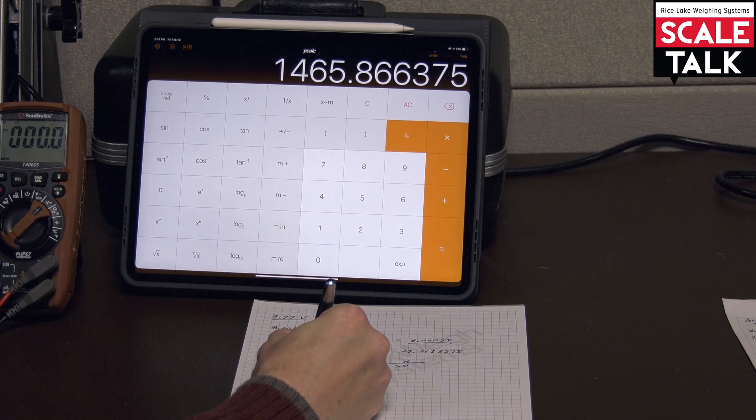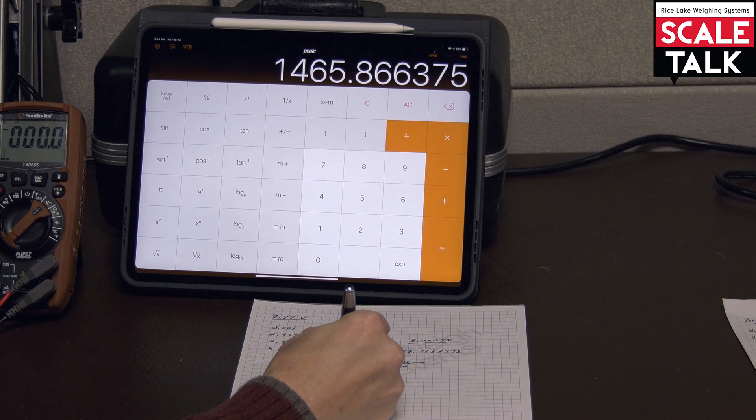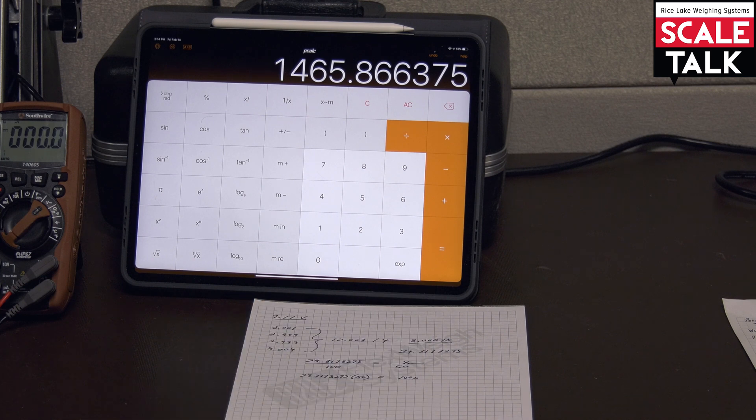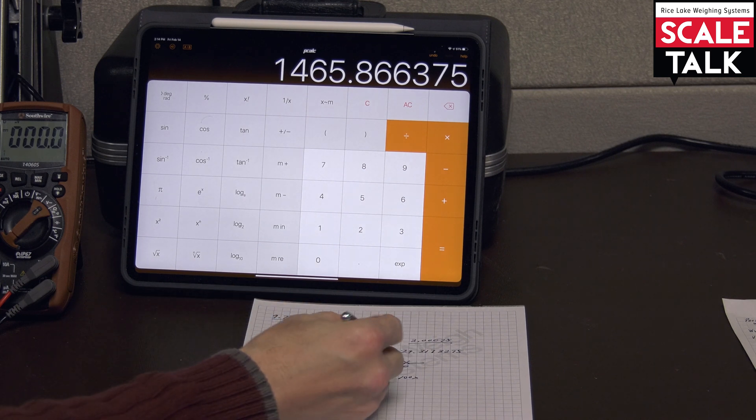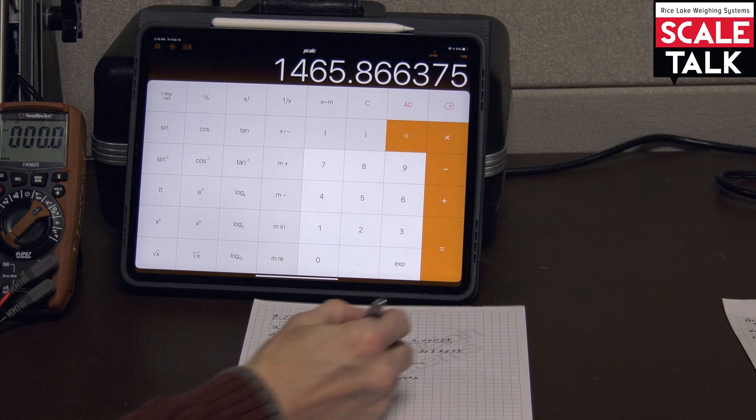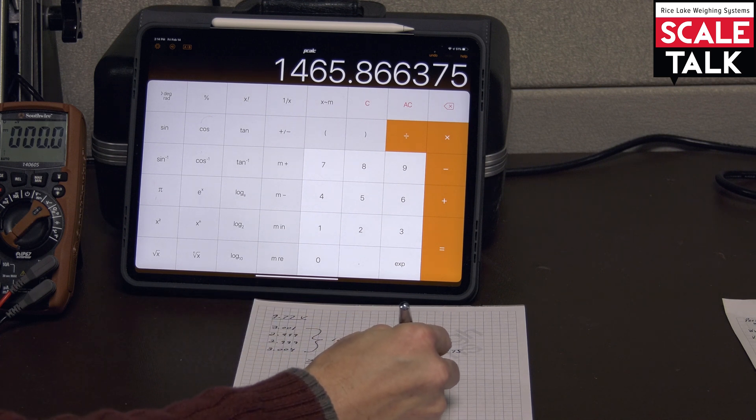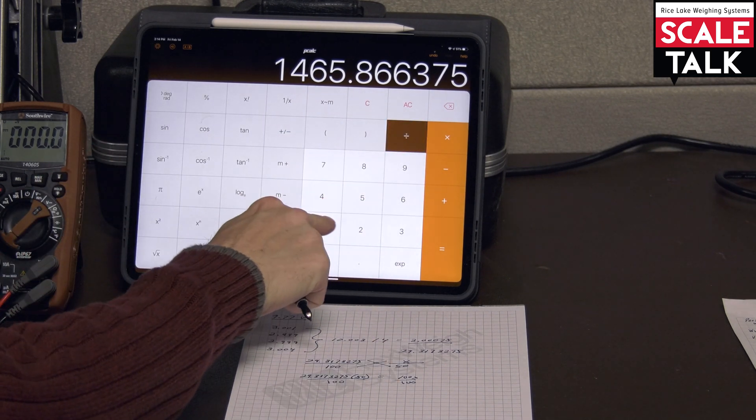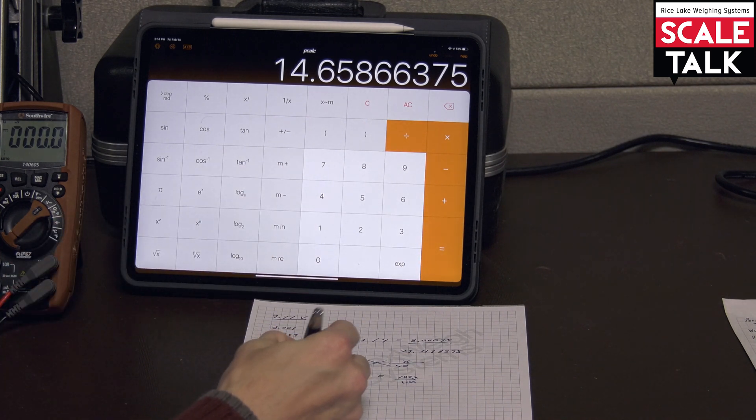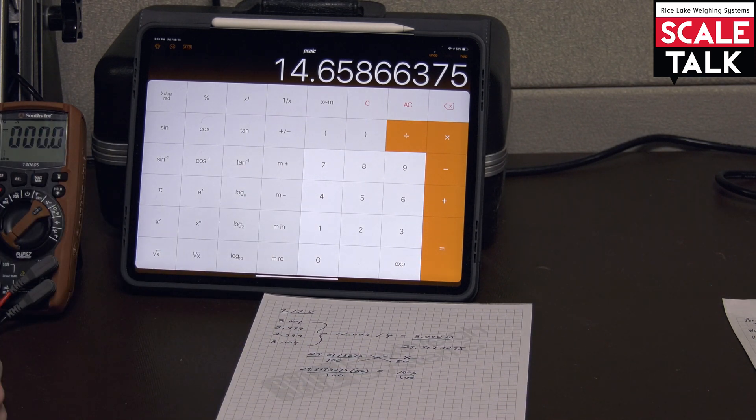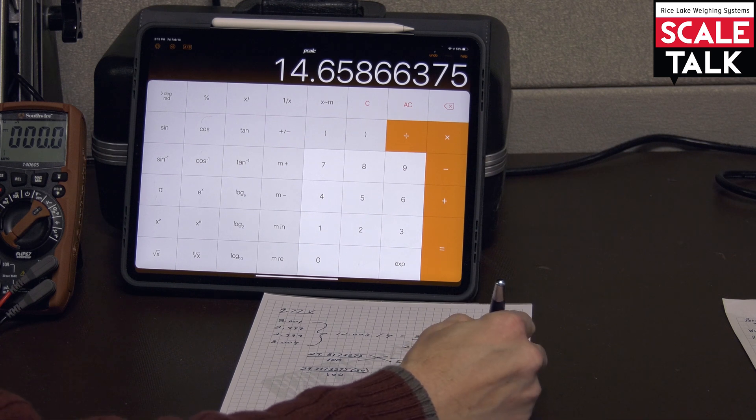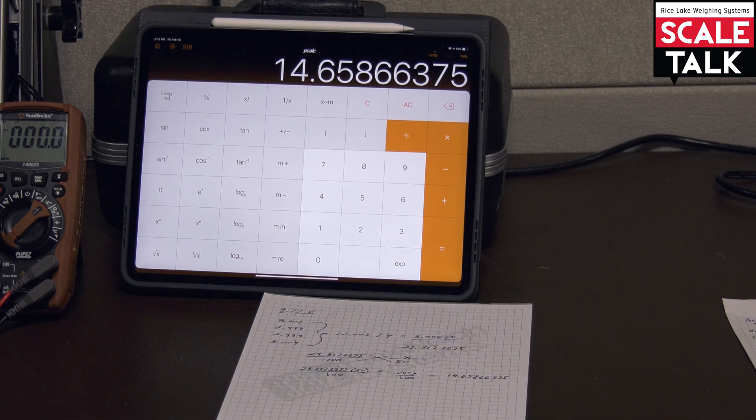And it gives us this value. So what we're doing here, we write this out. That's our cross multiplication. We take these two this cross way, multiply by these two this cross way, and they're equal to one another. So now I'm going to divide both sides by 100. So this answer gets divided by 100. And so this lets me know that at 50 pounds, which is what I'm setting as my span, that needs to be equal to 14.65866375 millivolts.